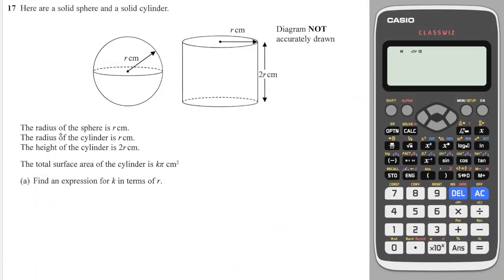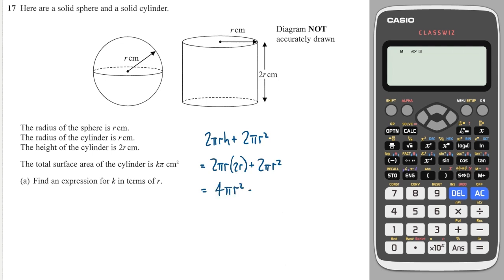We have a sphere and a cylinder. The radius of the sphere is r, the radius of the cylinder is r, and the height of the cylinder is 2r. The total surface area of any cylinder is the curved surface area plus the lid and the base, which are both circles — so there are two of them, each πr². So this is 2πr times height 2r, and multiplying up these brackets gives me 4πr² plus 2πr², a total of 6πr². We're told that that is equal to kπ.